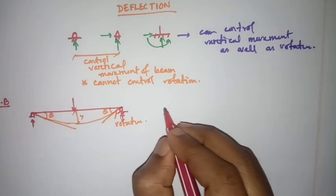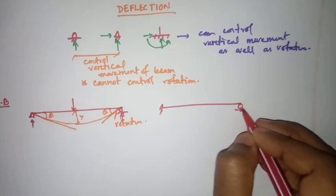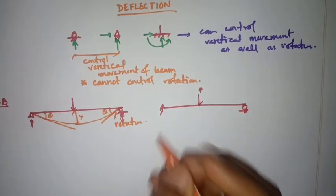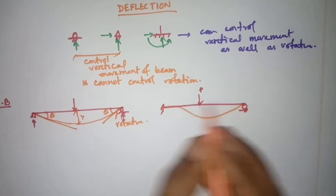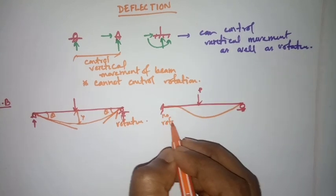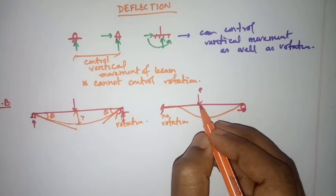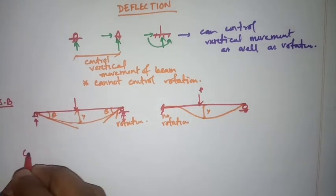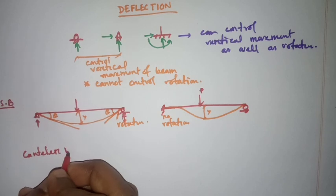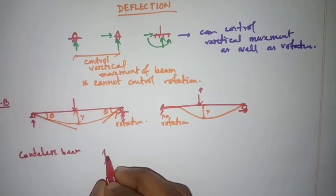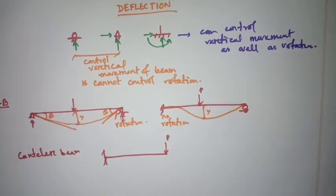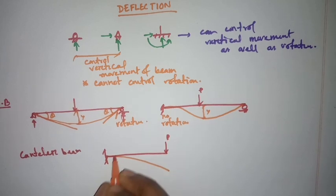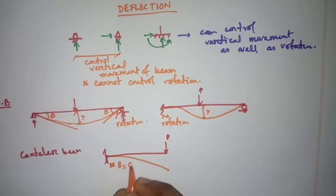If one side is fixed and another side is a roller with a load applied, the deflection curve will develop such that at the fixed end there is no rotation, but deflection will develop due to the load. For a cantilever beam with a fixed support and a free end with a load, the elastic curve shows rotation theta equals zero at the fixed end and maximum deflection at the free end.